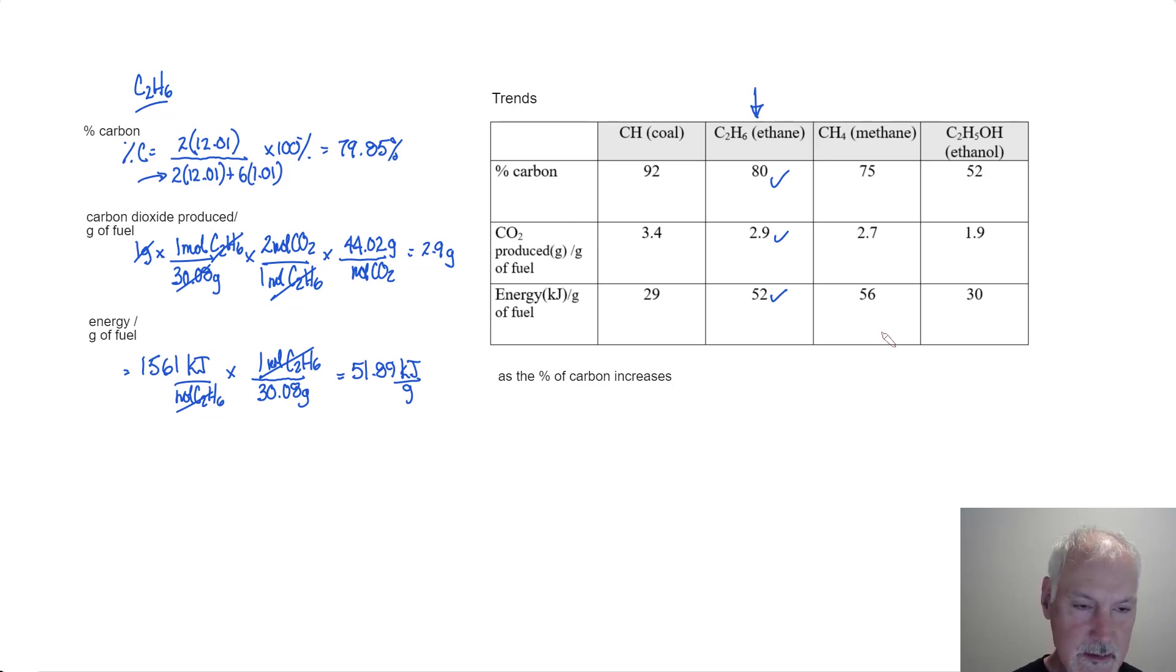So you need to be able to generate these particular numbers given some data. Now this one, the energy and coal, that's not in your IB data booklet. That one I just researched on the web. But I want to look at a couple of patterns here. First of all, as the percent of carbon increases. So we're looking at data as we move across this way. Well, the first thing I would like to note is something that we've come across a bit earlier is that as you increase the amount of carbon in a fuel, the amount of incomplete combustion increases. So of these fuels, I would expect ethanol to burn the cleanest versus coal, the dirtiest.